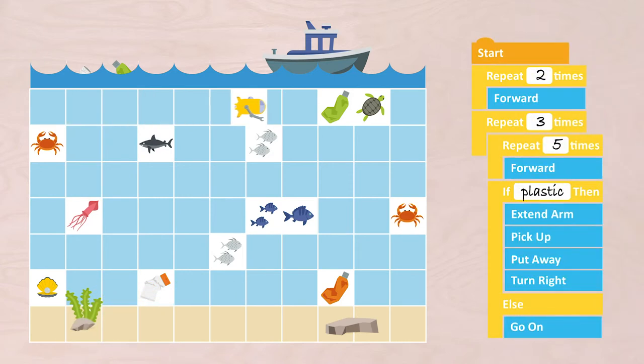Start, repeat two times forward. Then, repeat three times, repeat five times forward, if plastic then extend arm, pick up, put away, turn right.